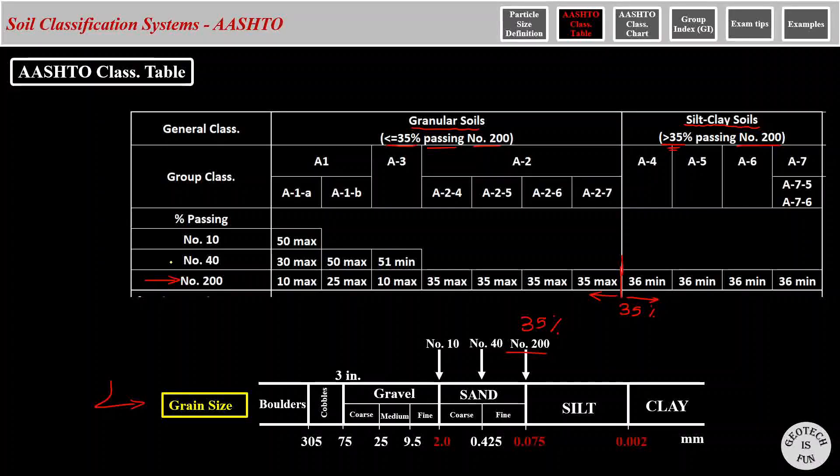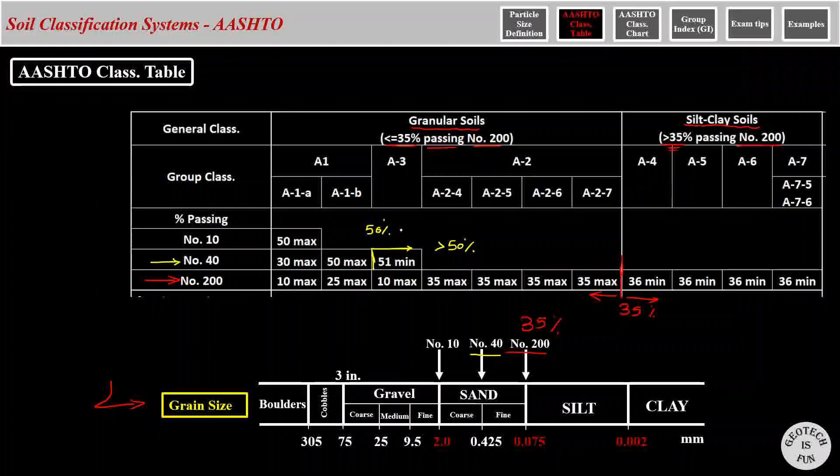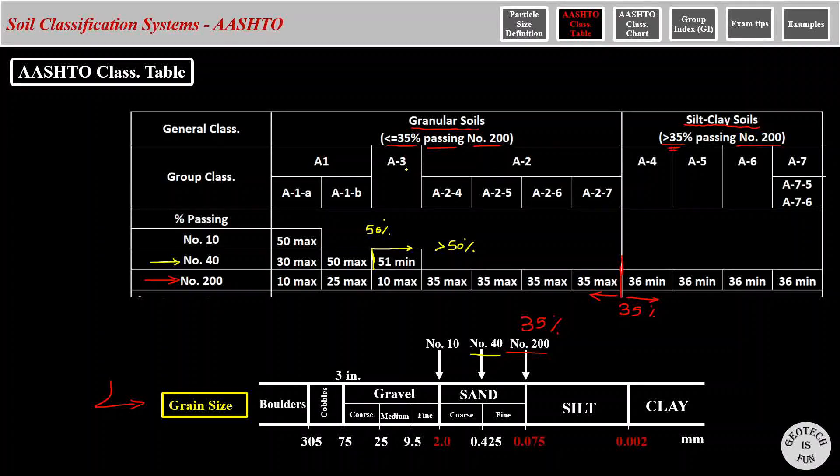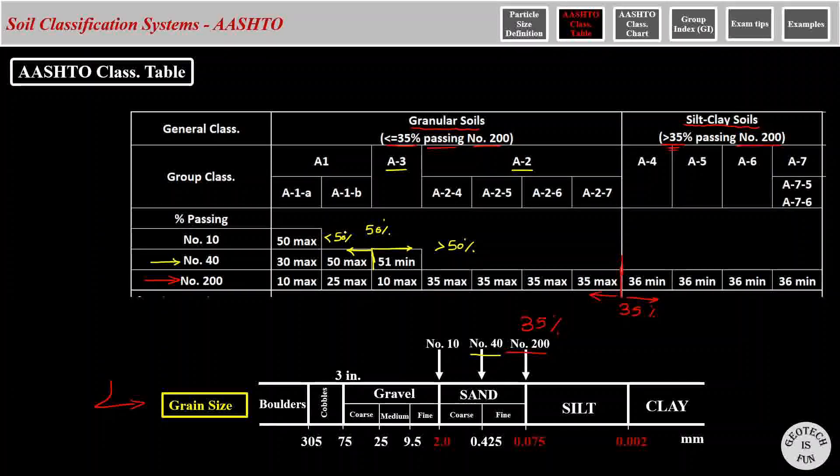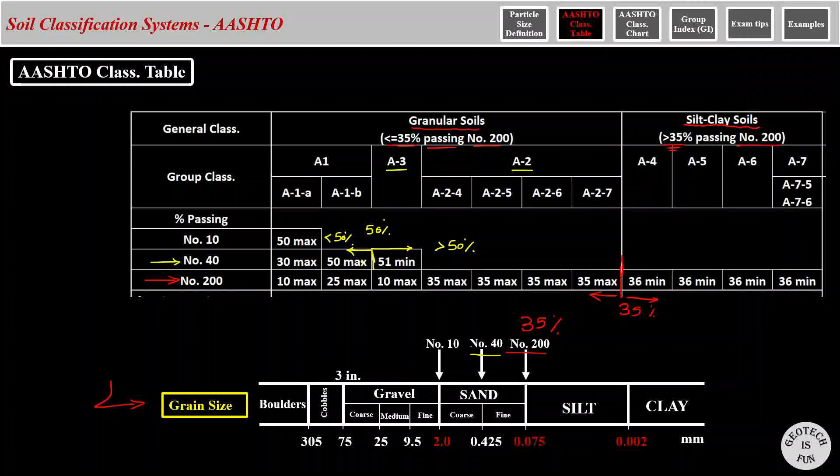The next sieve that we have in the table is sieve number 40. And as you can see down here in the table, this sieve is the boundary between coarse and fine sand. This boundary is right here in the table. And as you can see, it is 50%, meaning that if more than 50% of the material passes through sieve number 40, we have a fine sand, which includes A-3 and A-2s. And on the other hand, if less than 50% of the material passes through sieve number 40, we have coarse sand as well as gravel.